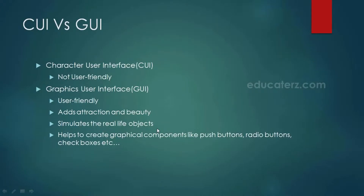CUI is character user interface. Earlier to GUI we had CUI, that is character user interface. In this, the user will have to enter all the commands which are in characters. For example, if a user wants to give a print command, he needs to type P-R-I-N-T and follow the correct syntax, whether to write it in capital letters or small letters, which is not very user friendly.